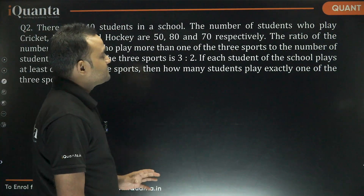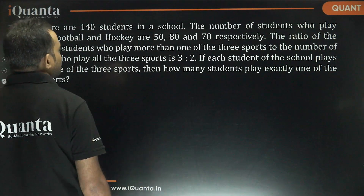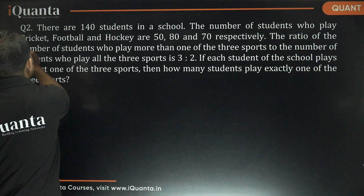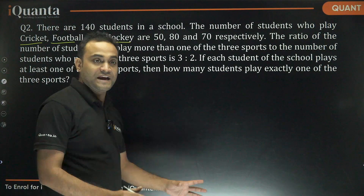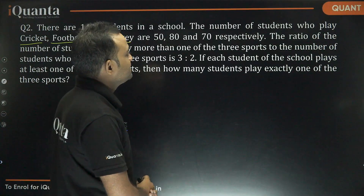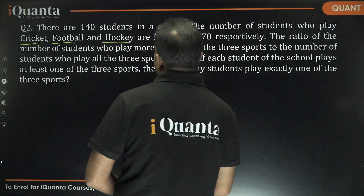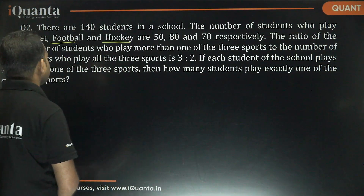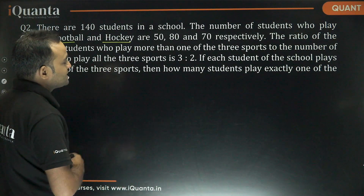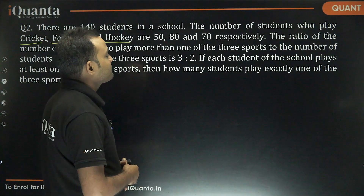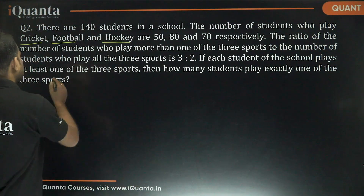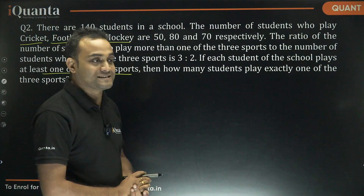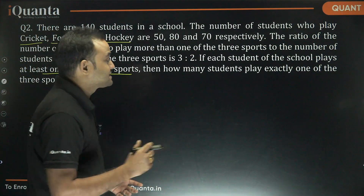The next question says: there are 140 students in a school. The number of students who play cricket, football, and hockey are 50, 80, and 70 respectively. The ratio of the number of students who play more than one of the three sports to the number of students who play all three sports is 3 to 2. If each student plays at least one sport, how many students play exactly one sport?